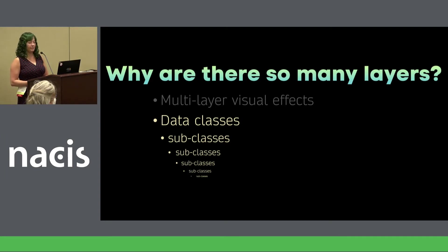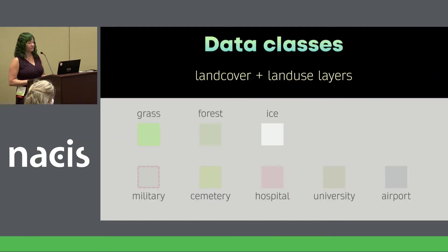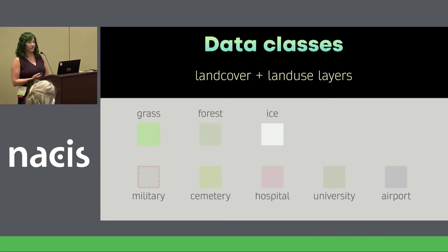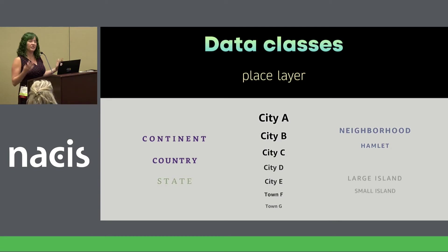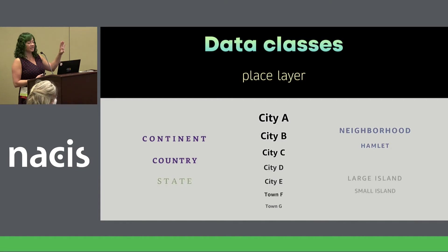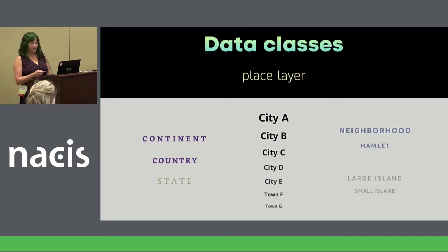In addition to multi-layer visual effects, data classes affect how many layers there are in the map. Within each data layer there are different classes of data. Here are two simple examples: land cover and land use — so two data layers become eight style sheet layers. In the place layer, cities are ranked using an algorithm that takes into account things like population as well as relation to nearby cities. I use that rank value to develop seven classes of cities that make sense worldwide. There are also things like continents, neighborhoods, and things like that.